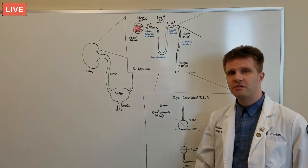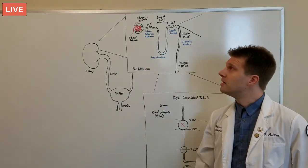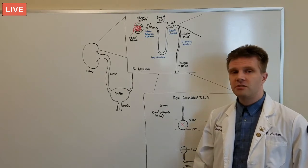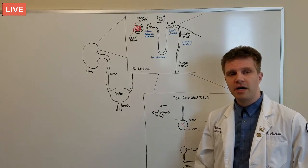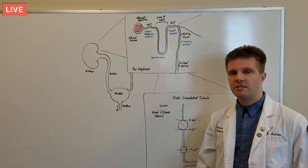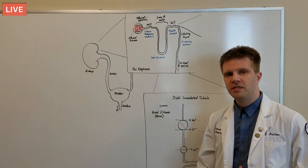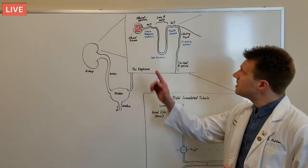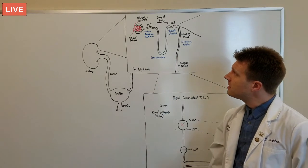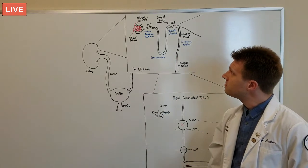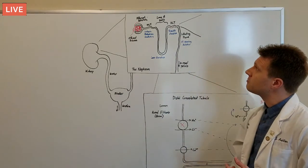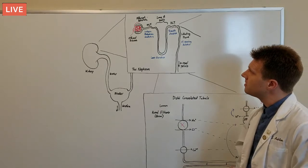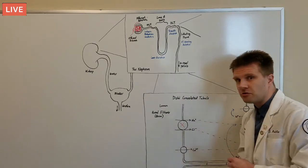There are complex series of channels and protein transporters. The nutrients and plasma are reabsorbed into the body, leaving the toxins in the filtrate to be excreted as urine. Each segment of the nephron performs a slightly different function. Thiazide diuretics like hydrochlorothiazide act on the distal convoluted tubule.